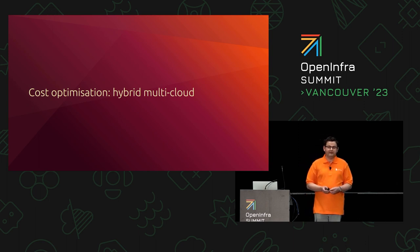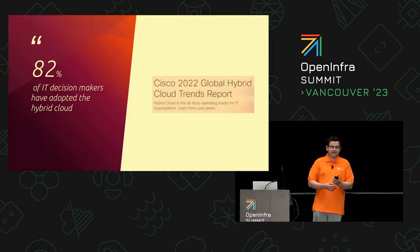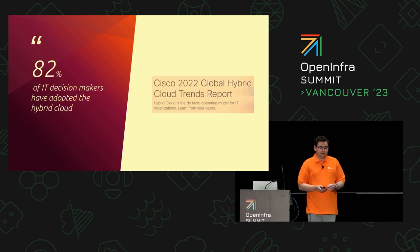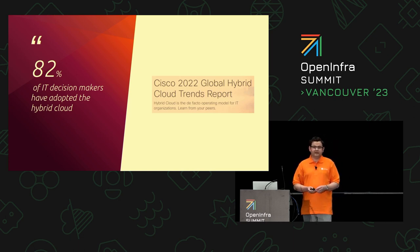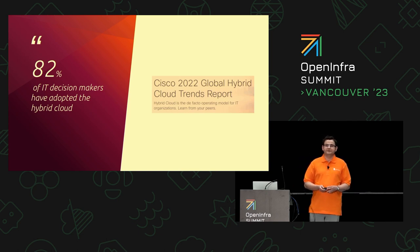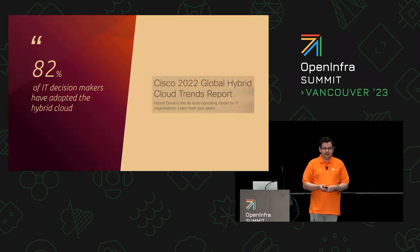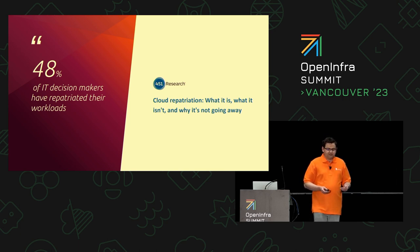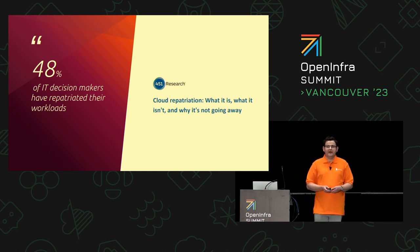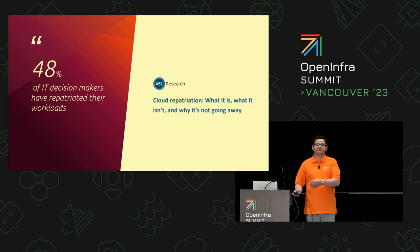Now moving to hybrid multi-cloud architecture. According to the global hybrid cloud trends report from Cisco in 2022, hybrid cloud is gaining momentum — 82% of IT decision makers have already adopted it. This is becoming a trend where everyone consumes some resources from public clouds while also running their own cloud infrastructure for various reasons, with cost optimization being one of them.